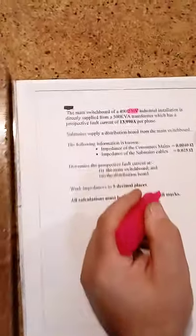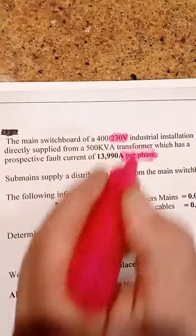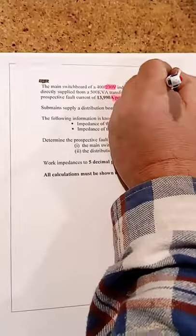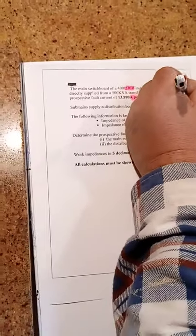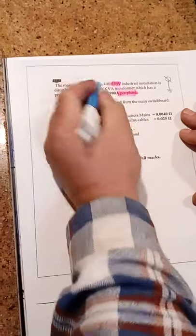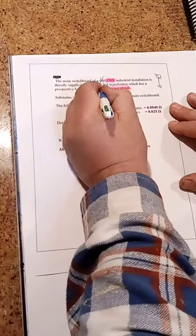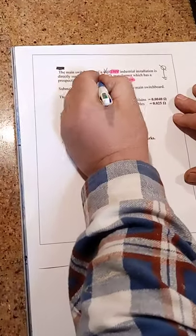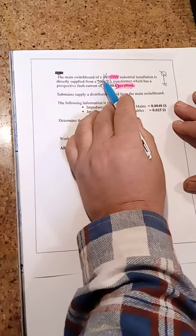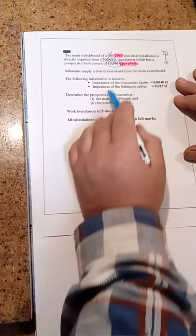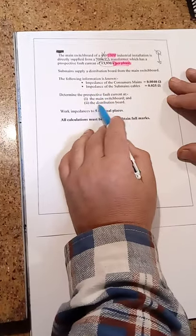For example, 230 volt - that applies because we have this thing down here called per phase. Now when we talk about per phase, a phase talks about down to earth. And that's where we're getting these fault currents from here down to earth. So we don't need the 400 volts and it says we have a prospective fault current of 13,900 amps. We just want to know the short circuit current down to earth at the main switchboard and at the distribution board.